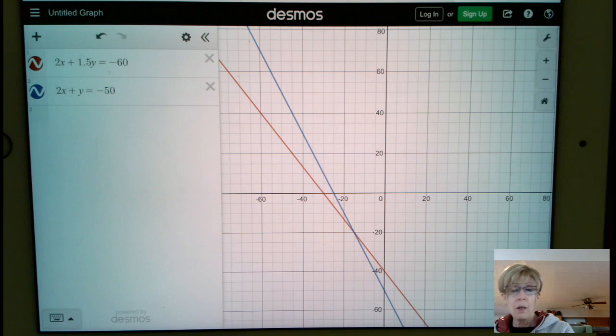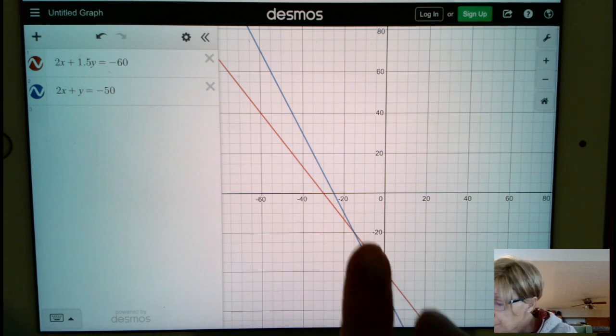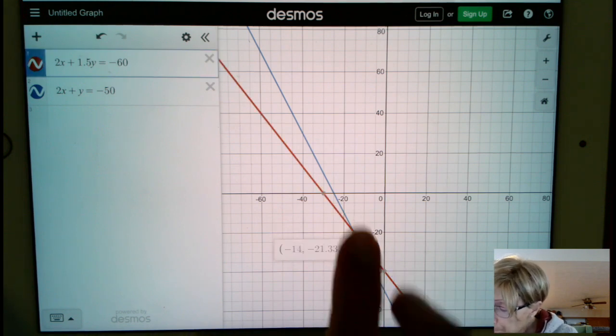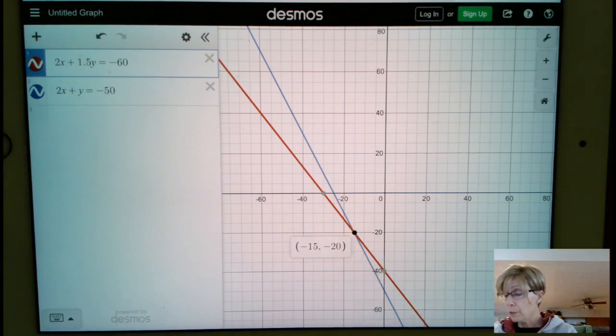2x plus 1.5 equals negative 60, 2x plus y equals negative 50. So there they are. I don't think that I am going to try to draw this in on the screen, but this is the point that we need that we're going to mark. So it's going to be negative 15, negative 20.